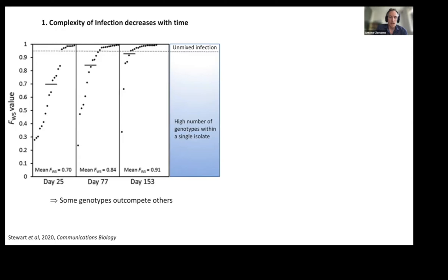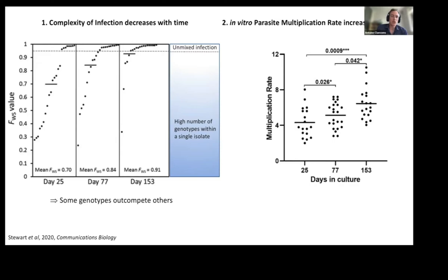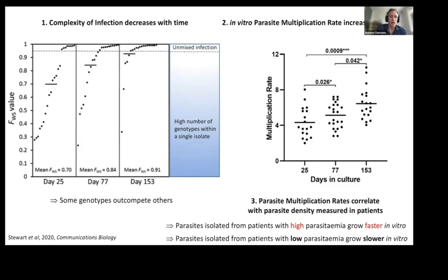We also measured the parasite multiplication rate, which is basically a measure of the exponential growth of falciparum every 48 hours. As you can see, it is consistently increasing over time in culture — parasites go faster and faster, but still slower than 3D7, by the way. So either there is a selection of fit genotypes, or these genotypes are adapting to the environment, or both.